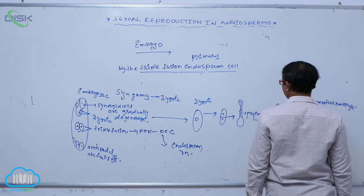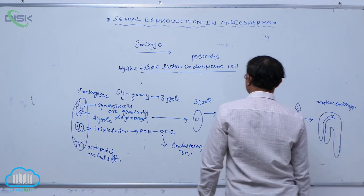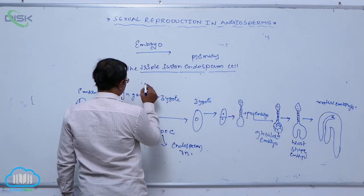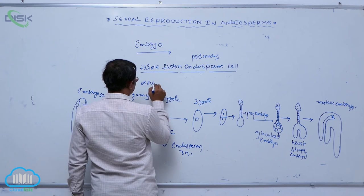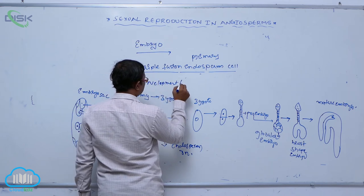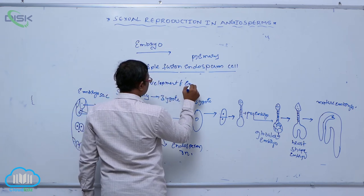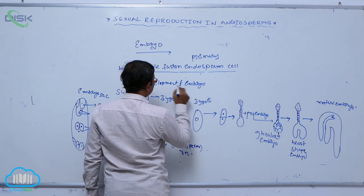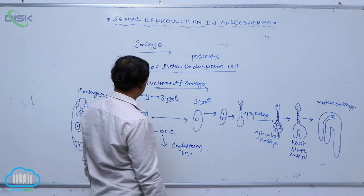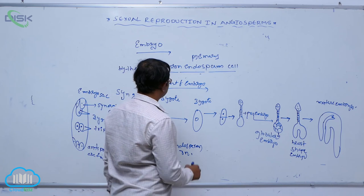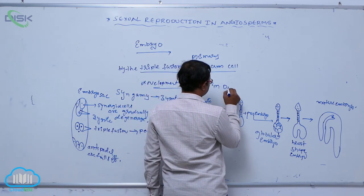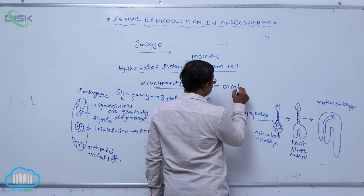So that is the important sequence — the development of embryo in dicot.